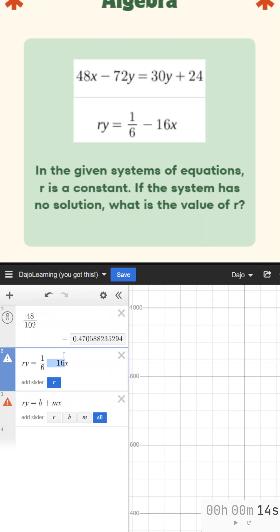this is written in ry equals b plus mx, where this is our slope, but we need to divide it by r to get our actual slope. And then b is our y-intercept. So we're really just doing negative 16 divided by r.